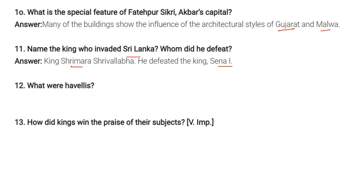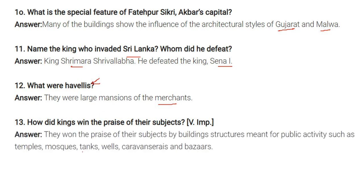Havelis were large mansions of merchants. Kings won the praise of their subjects by building structures meant for public activities, such as temples, mosques, tanks, wells, caravanserais, and bazaars.